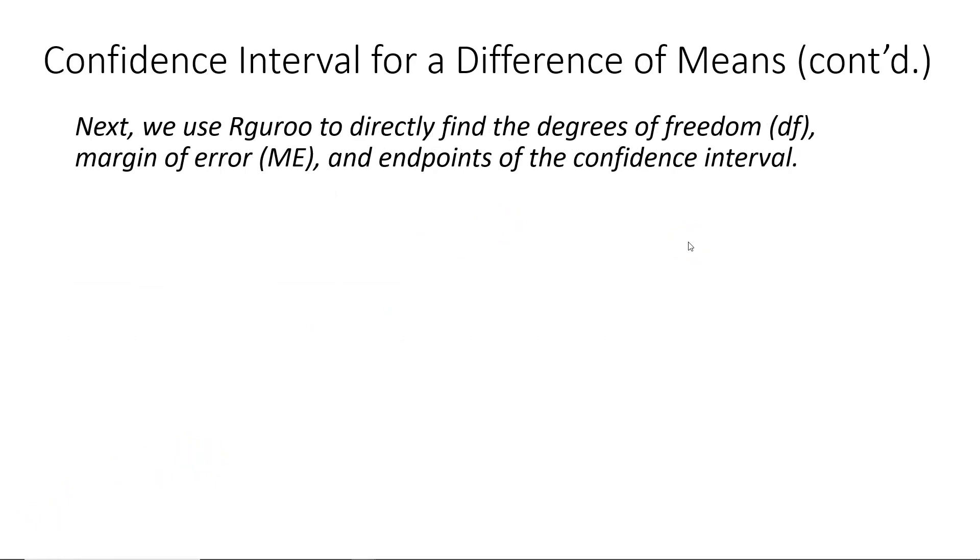Now this next step is where the two means case, the difference of two means case, differs dramatically from what we have done for one sample means. In the past, we've had a degrees of freedom that was a very simple formula which we then used to find a t* value for constructing our confidence interval. However, when we're dealing with a difference of two means, the degrees of freedom needed for finding the t* value is quite a bit more complicated. So we're going to bypass that process of finding the t* value first and instead we're going to use our guru to directly find the degrees of freedom rather than using a formula. And for free, at the same time, we're going to get the margin of error and end points of the confidence interval.